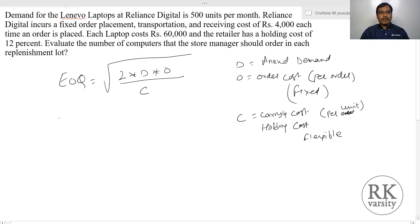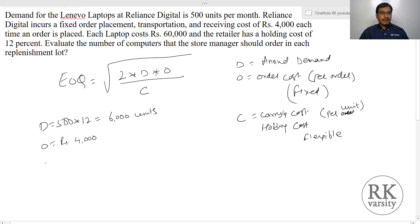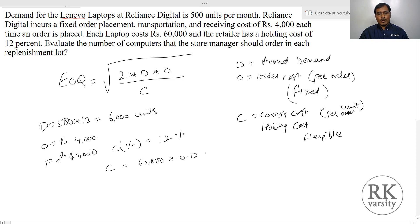Now, here in this example, your monthly demand D equals to 500 units per month, times 12, because we need an annual demand. So this gives you 6,000 units. The order cost O is Rs. 4,000. The price of the product equals to Rs. 60,000. And your carrying cost percentage equals to 12%. So your C, that is the carrying cost, equals to 60,000 into 0.12, which equals to Rs. 7,200.